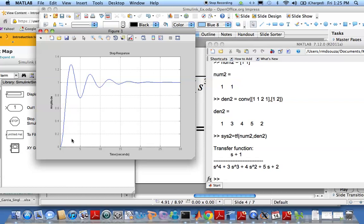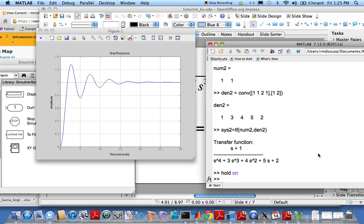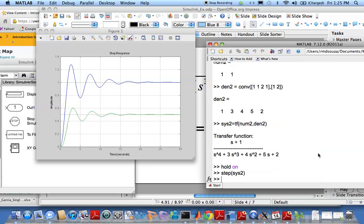So what I'll do is I'll hold this plot by typing in hold on, and then I'll do the step response of the second system. And there you have it.